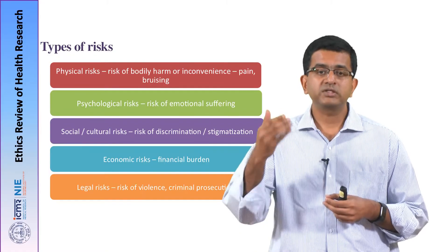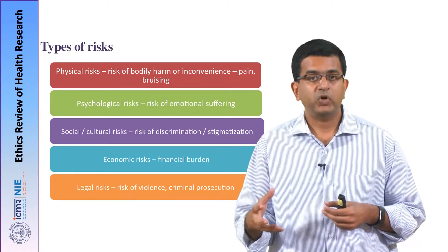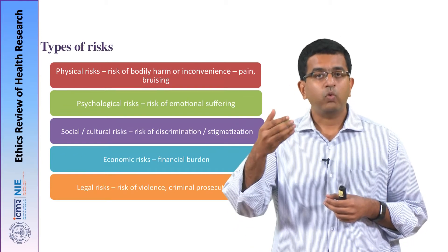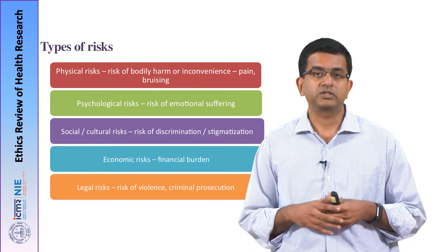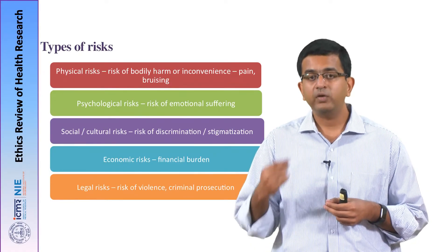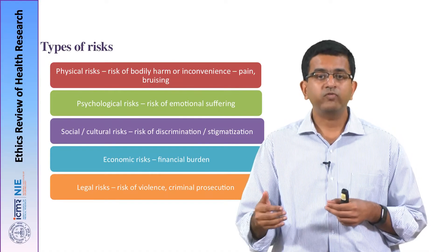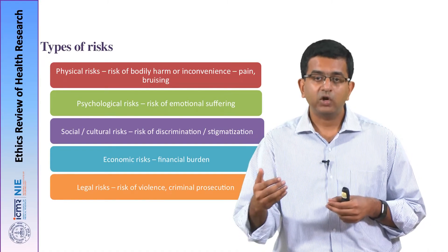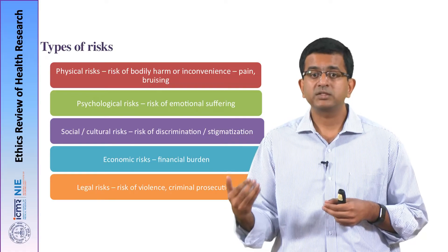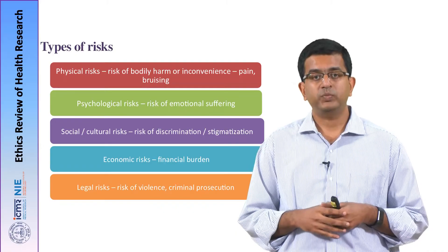There are various types of risks, and any given research project may contain one or several of these risks. The research project ethics committee evaluating the research project has to systematically look for physical risks, psychological risks, social and cultural risks, and economic and legal risks in any given research project.